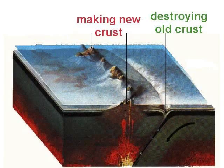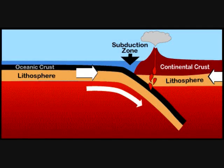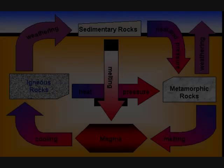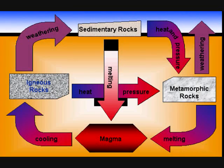Finally, these sedimentary rocks get pushed down into deeper levels and under high pressure and high temperature are changed into metamorphic rock. Eventually, metamorphic rocks are pushed even deeper until they are melted and turned into magma, and the cycle starts again.